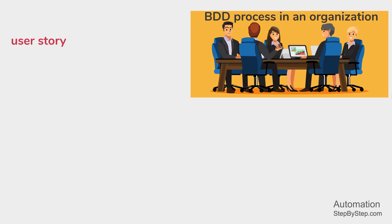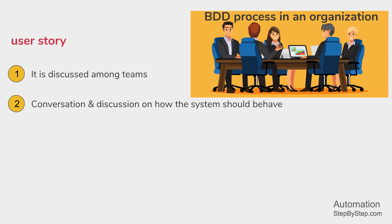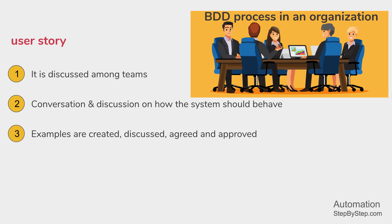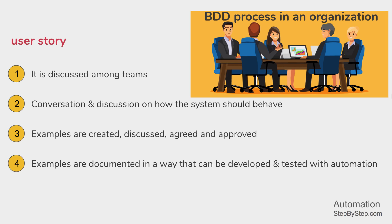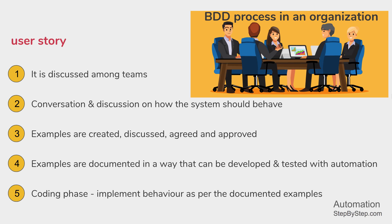Once we have a user story, we do a meeting between different teams. We have different disciplines of teams — people representing business teams, developer teams, and testing and QA teams. We discuss about the user story; there is conversation and discussion on how the system should behave. Examples are discussed, created, agreed upon, and approved. These examples are documented in a way that can be used for development, testing, and automation.